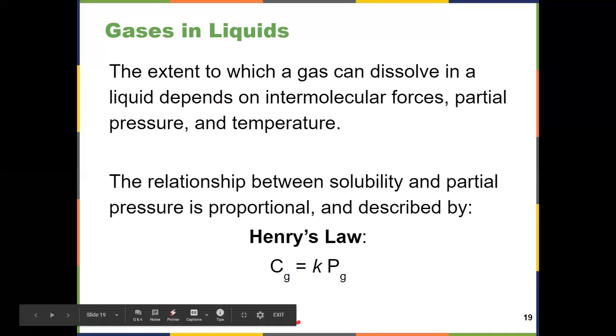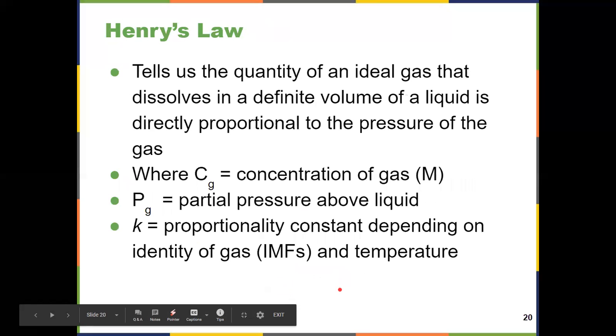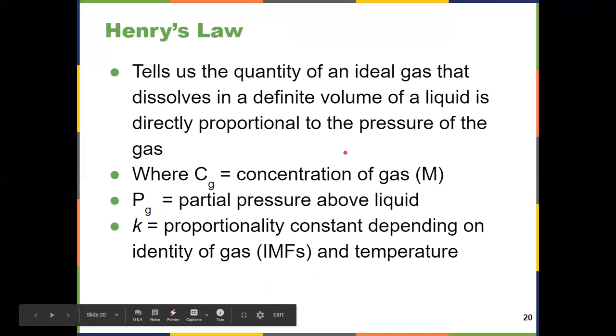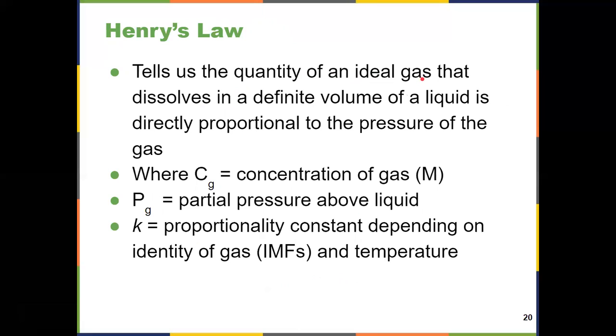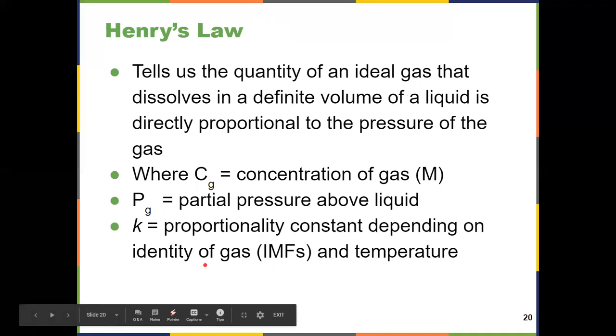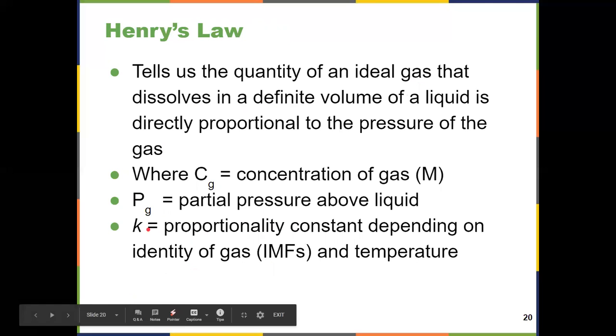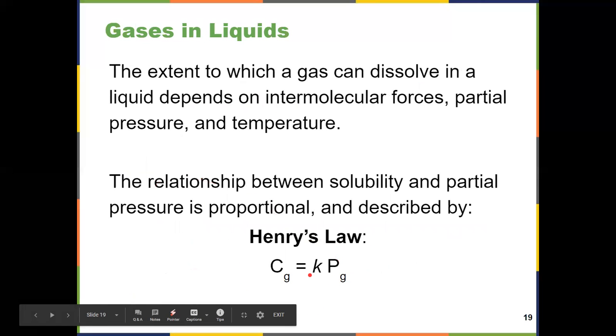We need to know how to use Henry's Law from Chapter 11. We have three key terms. The concentration of a gas is equal to a constant times the partial pressure of the gas. Henry's Law is a measurement of the concentration of a gas that can be dissolved, the quantity of an ideal gas that dissolves in a definite volume of liquid, directly proportional to the partial pressure. The higher the pressure, the higher the concentration of the gas. So CG equals partial pressure multiplied by that proportionality constant, which provides information on the identity of the gas with regard to its IMFs and the temperature. Changing the temperature or the identity would change the proportionality constant. But that proportionality constant will be given to you.